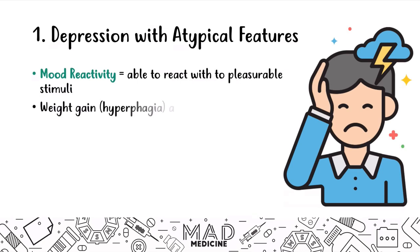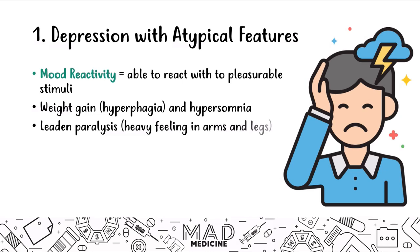Another thing that happens is patients usually end up gaining weight due to hyperphagia and hypersomnia — they eat a lot and they sleep a lot. That's not usually common in depression, where patients typically lose weight and experience insomnia, whether initial, middle, or end insomnia. Patients also get something called lead-in paralysis, where they have a heavy feeling in their arms and legs, and they're sensitive to rejection.